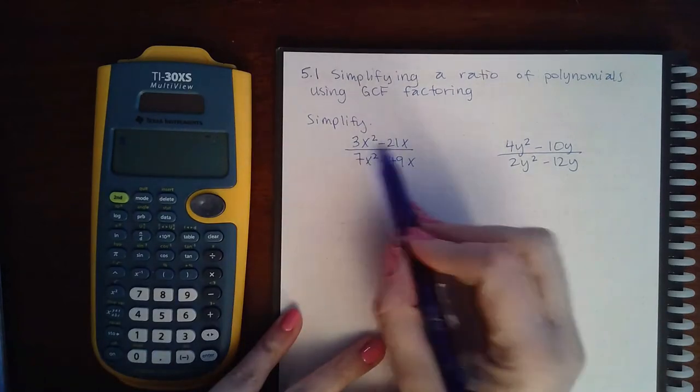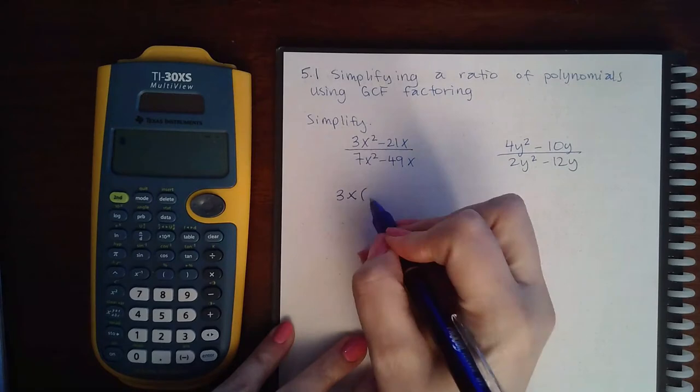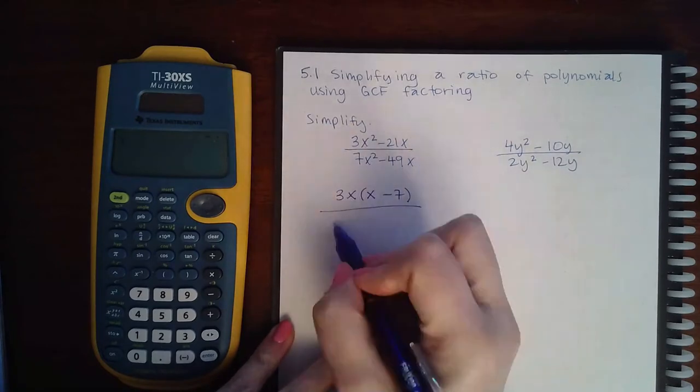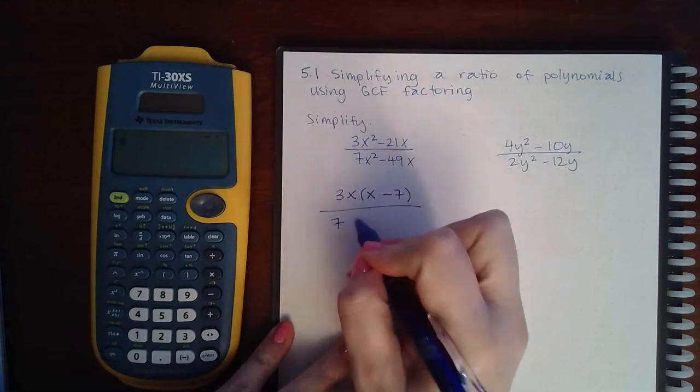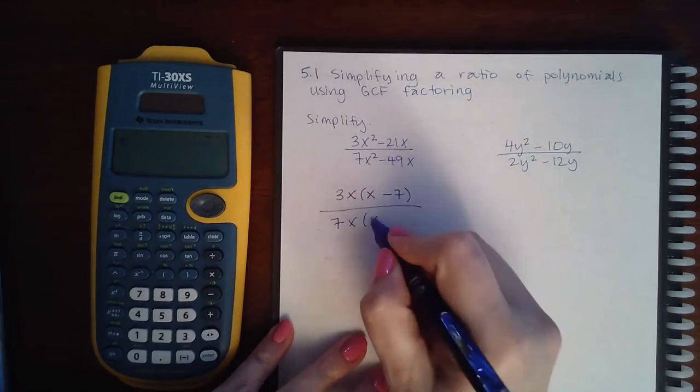For this expression, I have a GCF of 3x, and when I factor that out I end up with x minus 7. In the denominator, I have a GCF of 7x, and when I factor that out I end up with x minus 7.